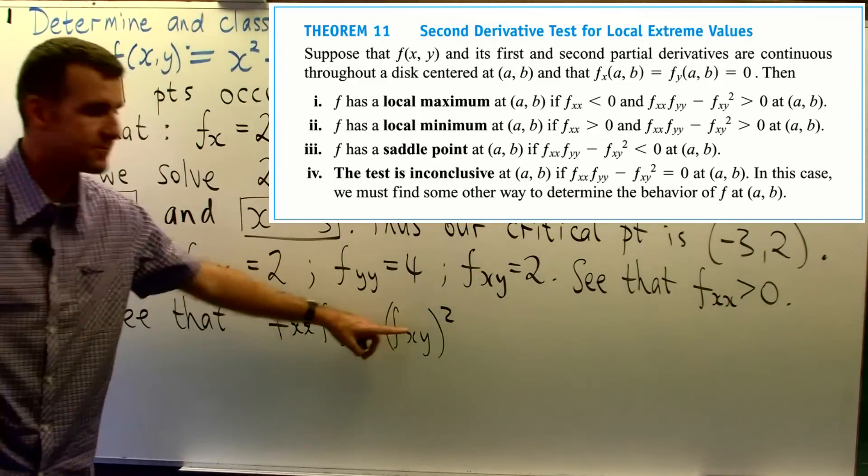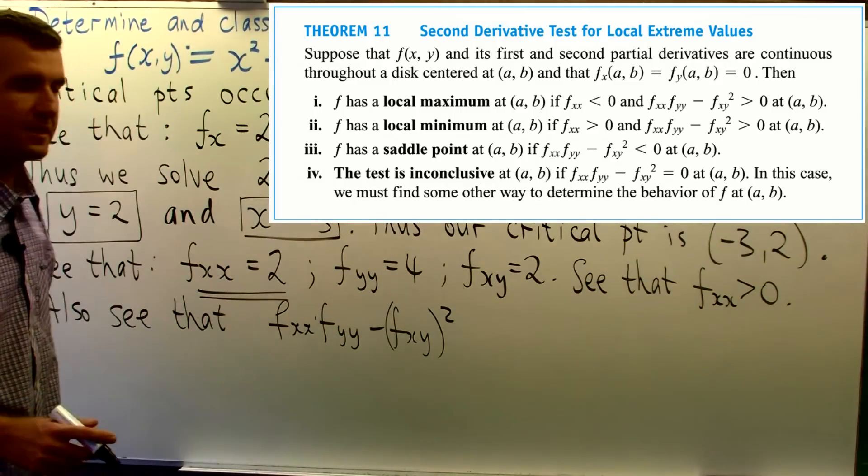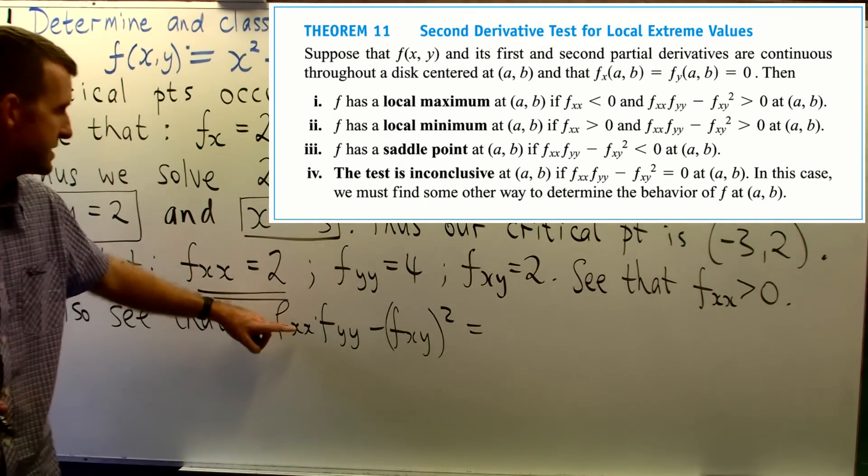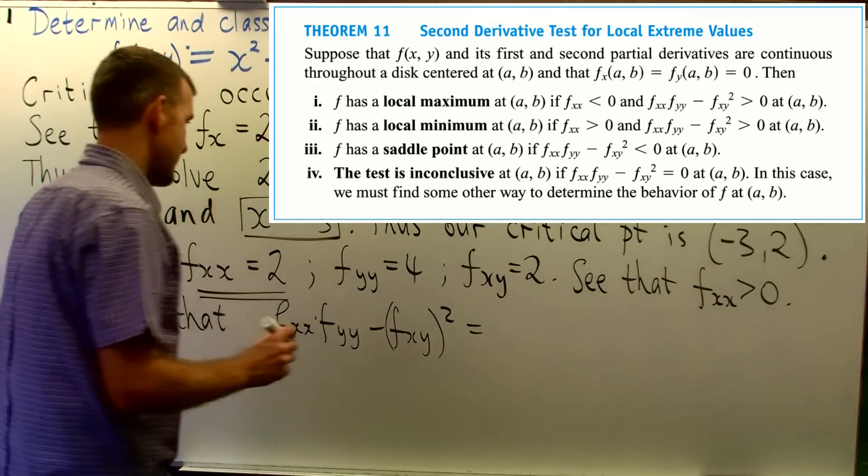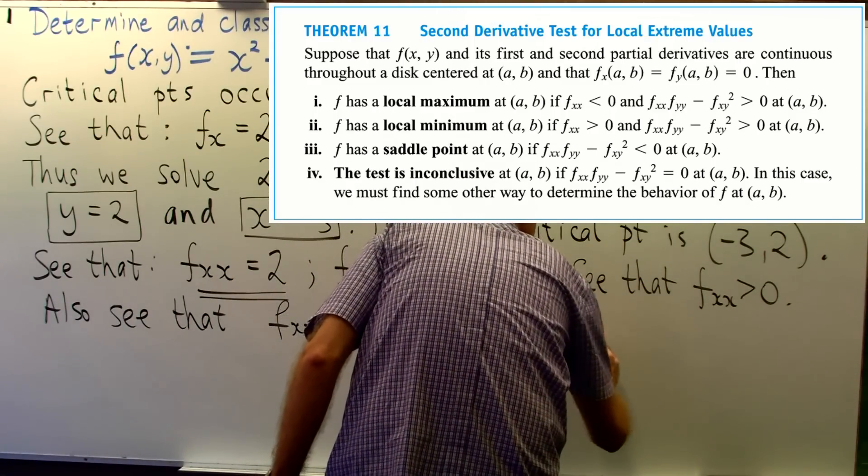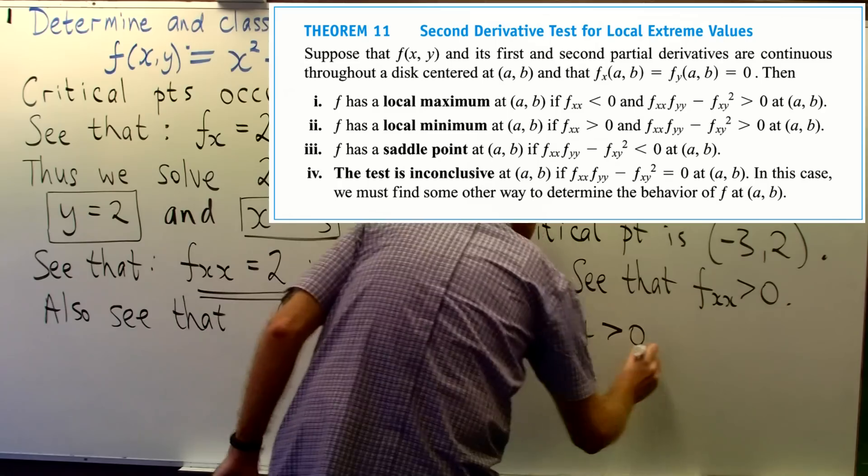Now the discriminant is defined in the following way. Okay, it's this expression here. Okay, so here we are going to get something like 8 minus 4. And again, it's positive.